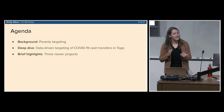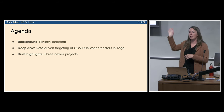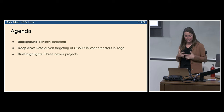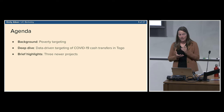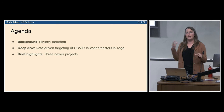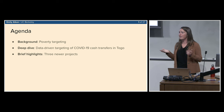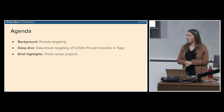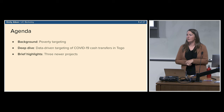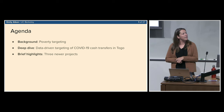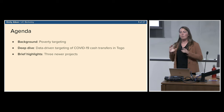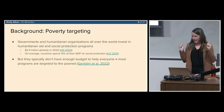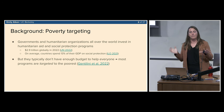My plan for this talk: I'll give a brief background on the area I've worked most in my PhD, which is poverty targeting and the targeting of humanitarian aid, and how that relates to both ICTD and machine learning. Then I'll do a deep dive for most of the talk on one project — a big project with the government of Togo on targeting cash transfers during COVID using machine learning and digital data. At the end I'll briefly highlight a few newer projects.